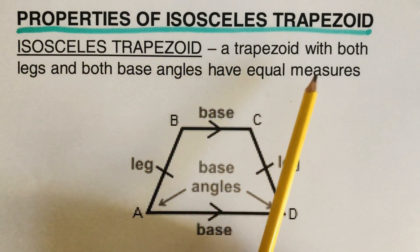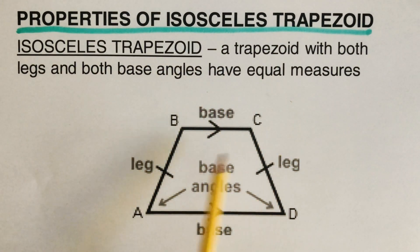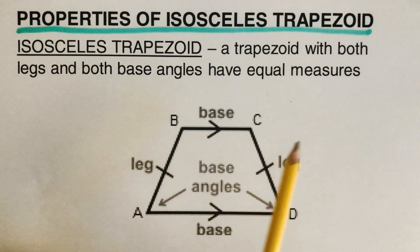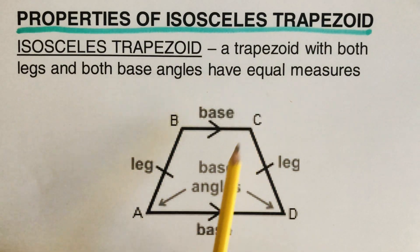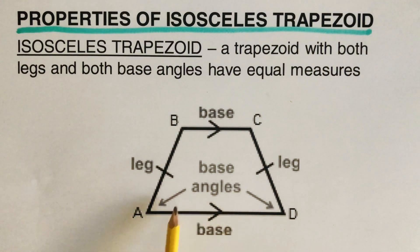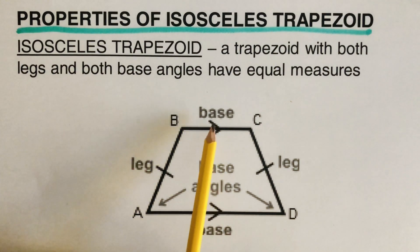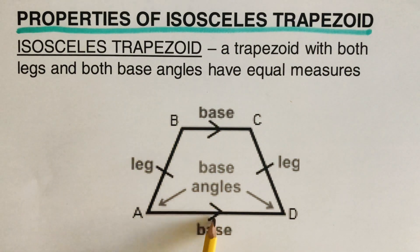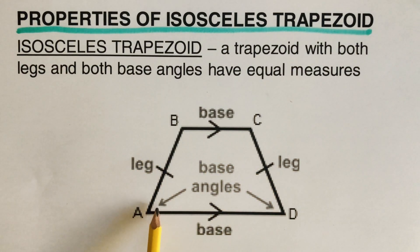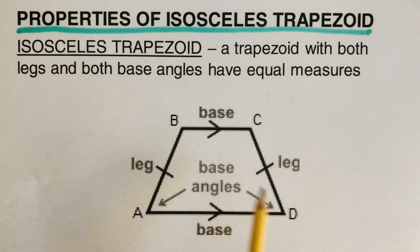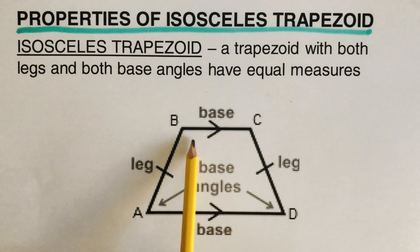An isosceles trapezoid is a trapezoid with two legs. The parts of an isosceles trapezoid include the legs, the base angles, and the bases. The sides that are parallel to each other are called the bases, and the sides that are not parallel are the legs. The angles at the corners where the bases meet are called the base angles.